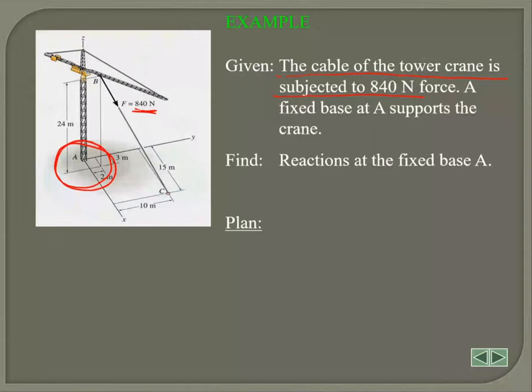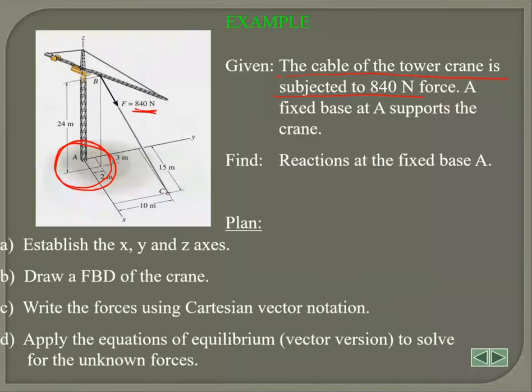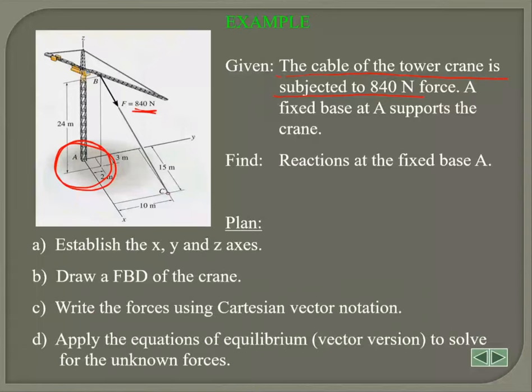It's fixed to the ground, it cannot rotate in any axis, it cannot move in any axis. So you have three linear constraints and three rotating constraints. So the very first thing we're going to do is draw the free body diagram of it.